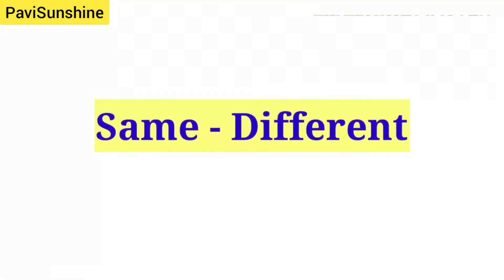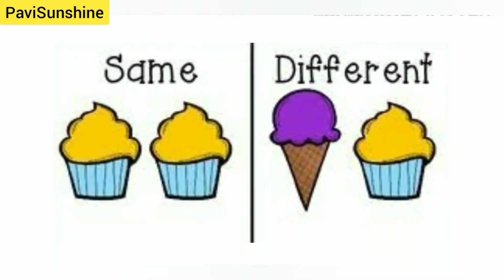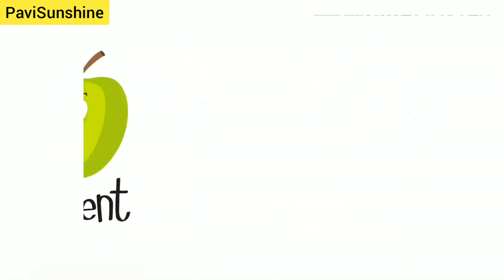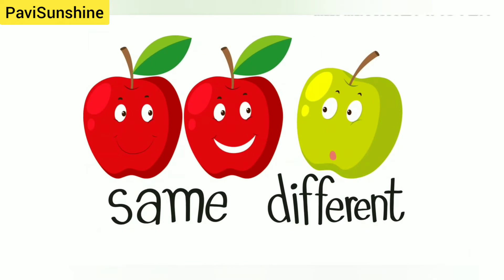Now we have same and different. We have ice creams — two ice creams are same and two are different. Same, different. Two apples are same and one is different. Say with me: same, different.